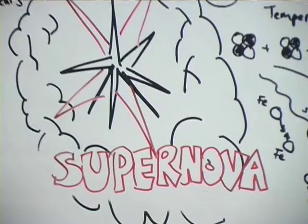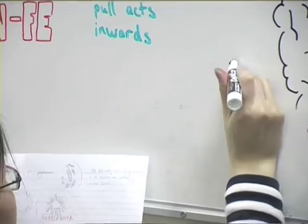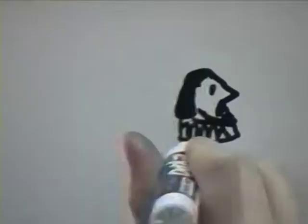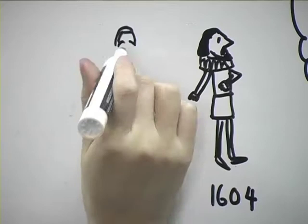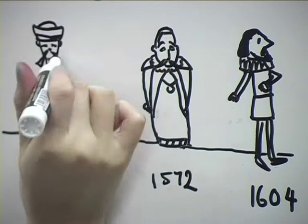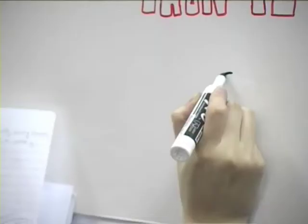Supernovae can be observed in the sky with the naked eye because they are so bright. The youngest supernova observed in our galaxy was seen by Johannes Kepler in 1604 and Tycho Brahe recorded seeing one in 1572. The earliest record of a supernova is from 1054. This produced the Crab Nebula and was observed by Chinese astronomers.